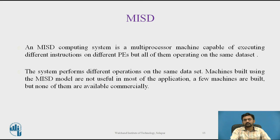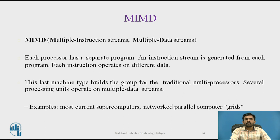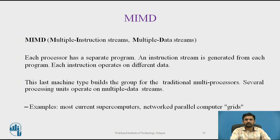The last classification is MIMD — Multiple Instruction Stream and Multiple Data Stream — where each processor has a separate program. An instruction stream is generated from each program, and each instruction operates on different data. This machine type builds the group of traditional multiprocessors. Several processing units operate on multiple data streams with multiple instruction streams.